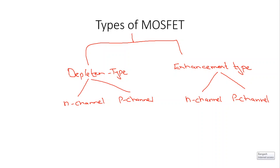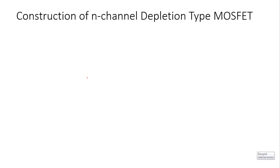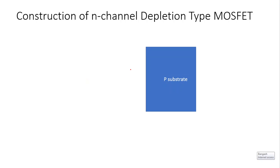In this video we are going to start with the depletion type MOSFET, and specifically we are going to study the n-channel depletion type MOSFET. First, let us study the construction of the n-channel depletion type MOSFET. A slab of p-type material is formed from a silicon base, and it is known as a substrate. We add some trivalent impurity to make it a p-type material, and this p-type material acts as the foundation or base on which the device is constructed.